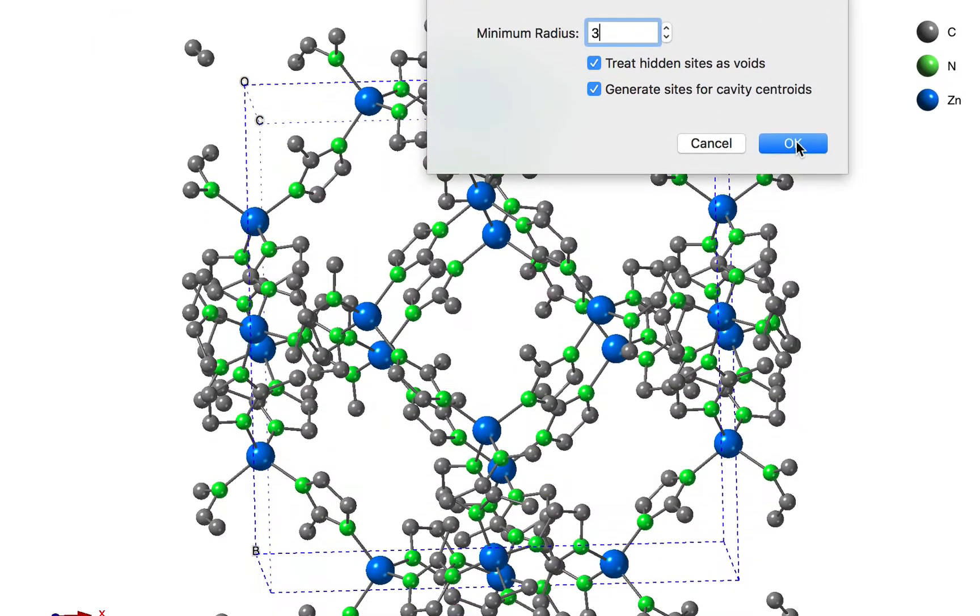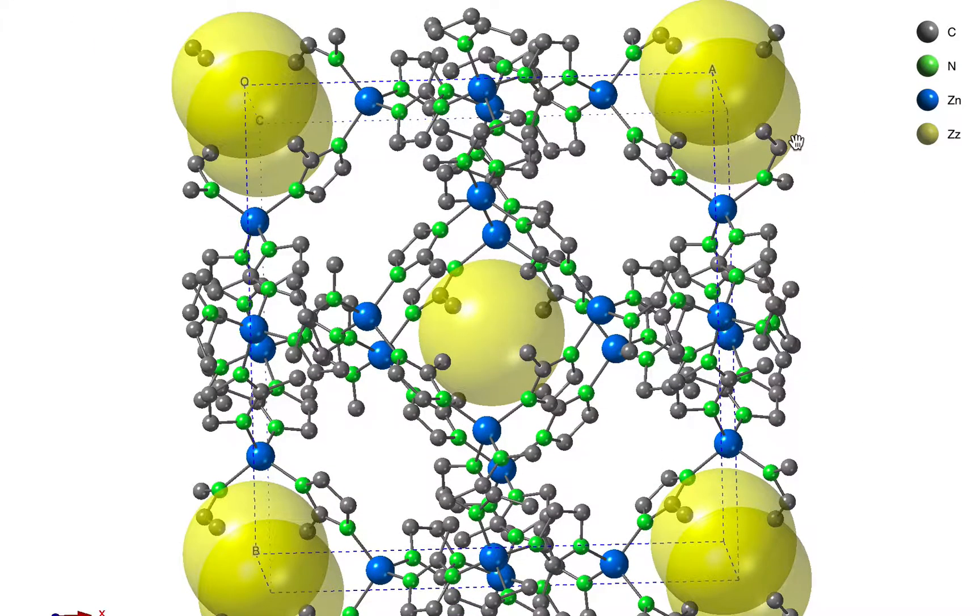If we click OK, CrystalMaker figures out where the cavity is in this structure and puts a dummy atom of the appropriate size in the center.